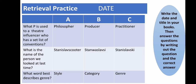Please make sure that you put the correct answer in your books. Number one, the answer is C, practitioner. Number two, the answer is C, Stanislavski. And A, style is the answer to number three, what word best describes genre? Please make sure you have the correct answers in your book.